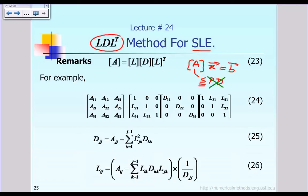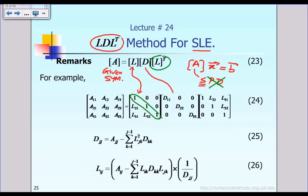The given matrix A is still required to be symmetric, but it does not have to be positive definite. We want to factorize or decompose matrix A into the product LDL transpose. The matrix D is a diagonal matrix, and L is a lower triangular matrix where the diagonal entries are always equal to 1, as shown in equation 24.